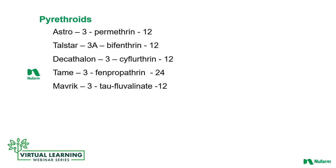After the systemics come the contact products. The quick-knockdown contact group — pyrethroids, all class 3 — includes familiar names like Astro, Talstar, Decathlon, Tame, and Maverick. Highly toxic and very easy for resistance to build with repeated use, these spray contact products provide a quick fix to certain insect infestations. Do not use these products without another IRAC class in the tank mix to prevent resistance from building.